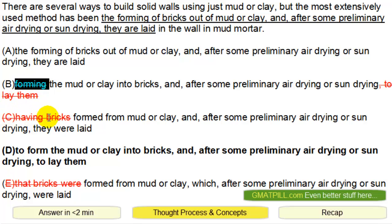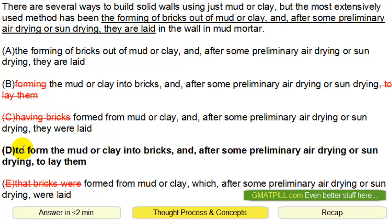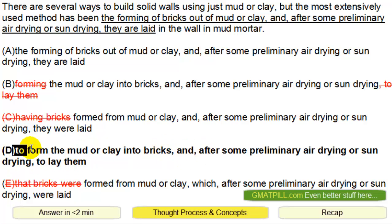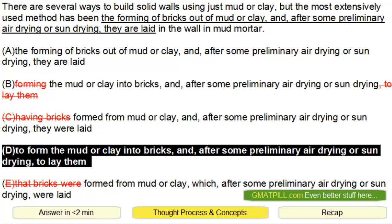C starts with 'having bricks,' so we don't even bother reading that part. With D: 'to form' — yes, that's good. Keyword AND, and then 'to lay.' So 'to form' is consistent with 'to lay,' so that's good. That's probably what we want — D. If you want to be sure, you can look at E, but E starts off already wrong: 'that bricks were formed.' So that beginning part is already wrong, so that's why we choose D as the final answer.